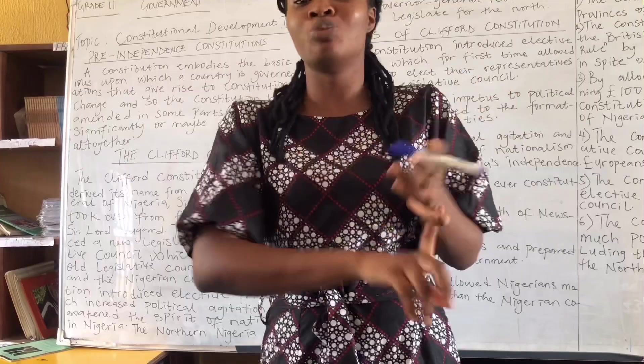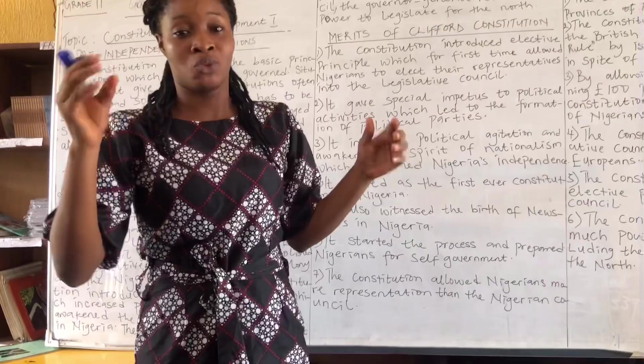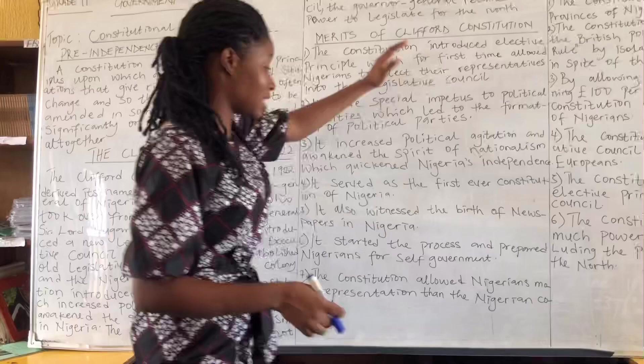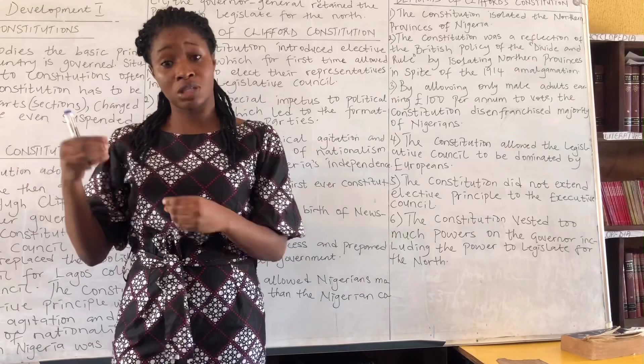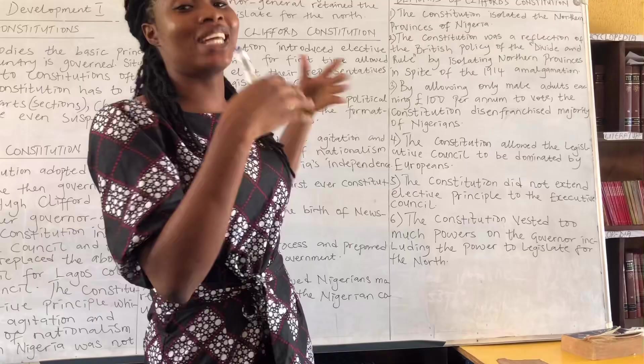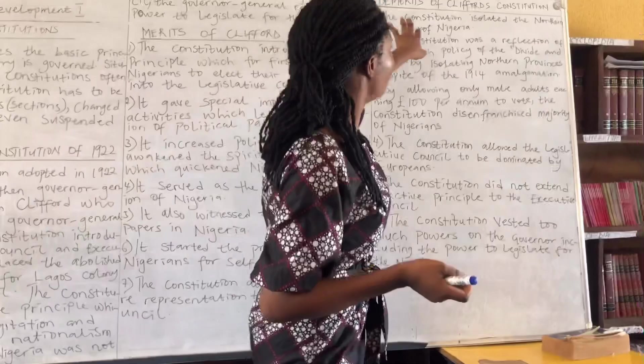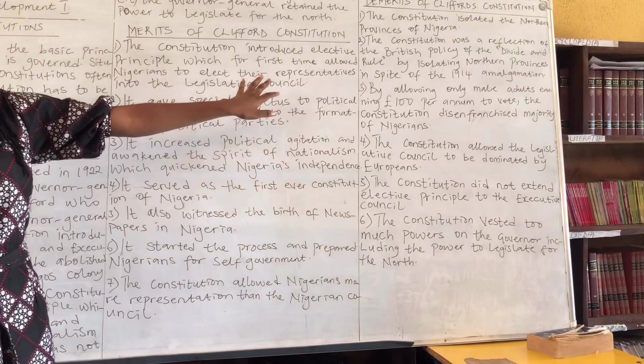Now we'll look at the demerits of this constitution. Despite the fact that it created a legislative council to give Nigerians more representation, it also had significant disadvantages — some probably worse than the previous disadvantages of the Nigerian Council.